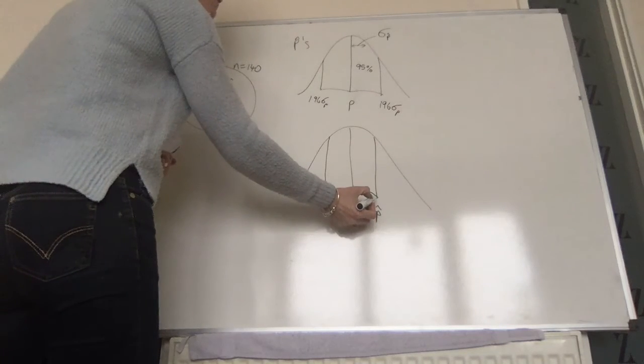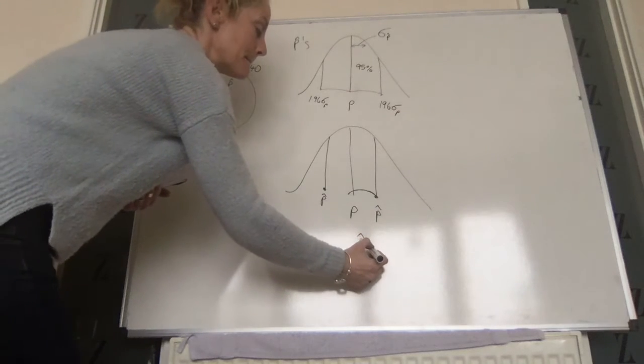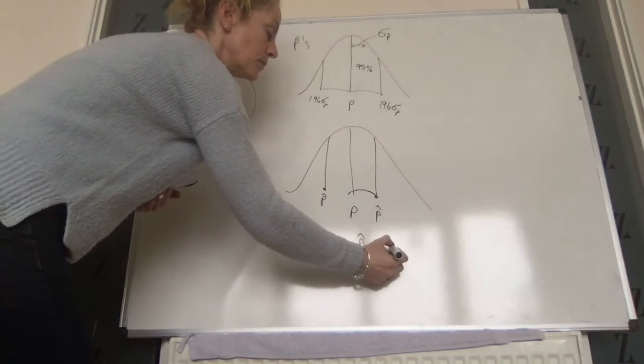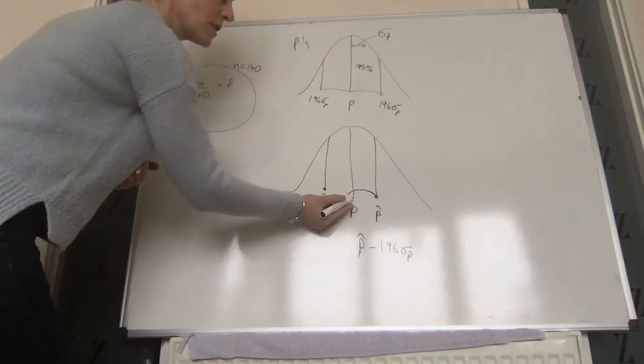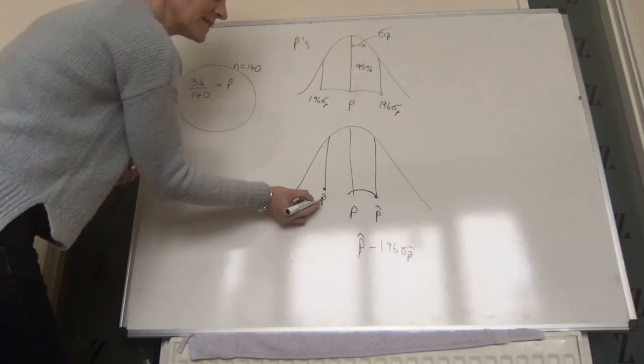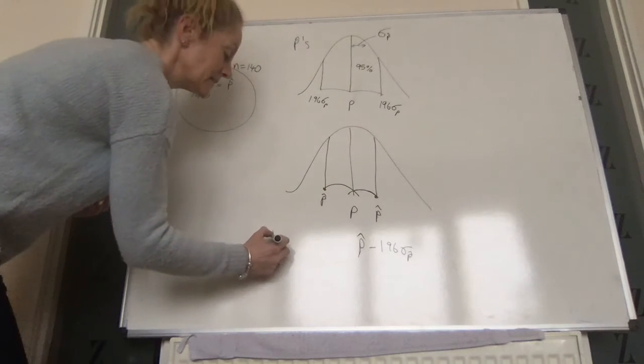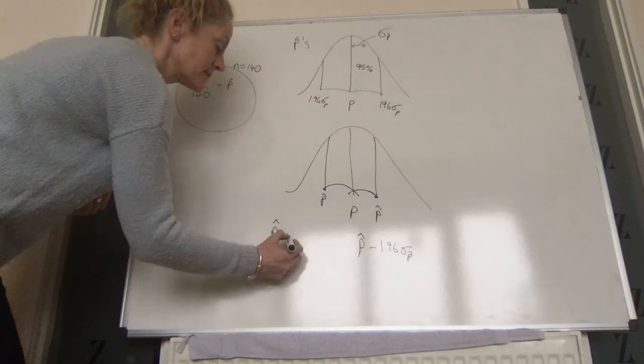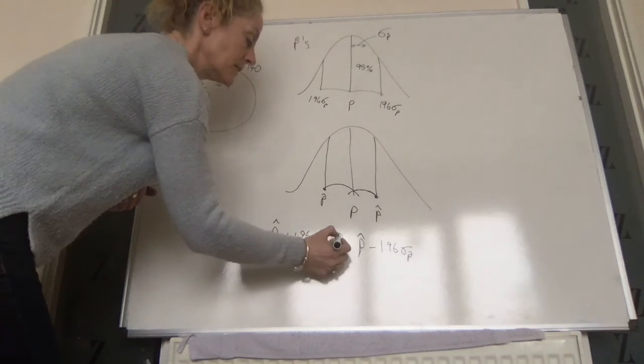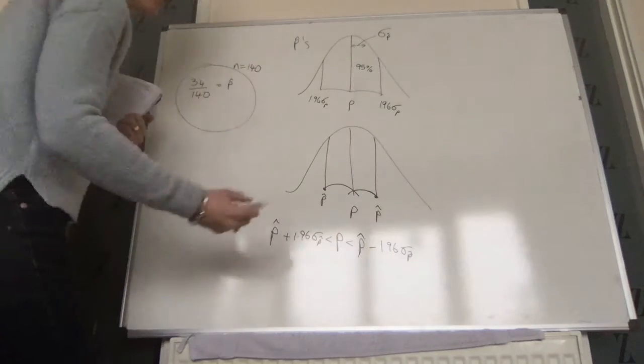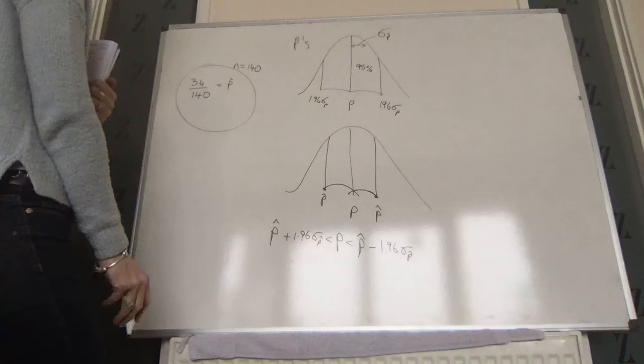So if it was on this side, we would take p-hat minus 1.96 sigma p-hat, and that would catch our p in there. But we don't know that it's not on this side, so we also need to do p-hat plus 1.96 times sigma p-hat. And we can be 95% sure that our p is somewhere between those two values.